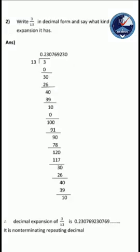Second question: write in the decimal form - 3/13 in decimal form. So the question is 3/13, which is in P by Q form. Converting P by Q form to decimal form is very easy - all of you know how to divide numbers. Just a division: 3 divided by 13, and we can easily find the answer.